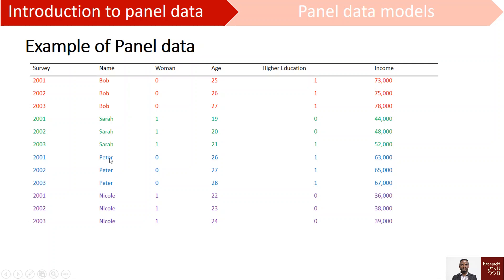We collect data from the same units — we don't change the people we are collecting data from. That is panel data. If we change the unit, for example, we no longer go back to the same people but instead collect from different people, then that does not constitute panel data.